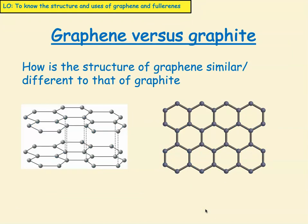Let's look at graphene versus graphite — how is it similar or different? Pause the video now and think about the ways that they are similar and the ways that they're different. The ways that they're similar is that they are both made of carbon, and they both have hexagonal rings of carbon. They're different insofar as graphite has multiple layers, whereas there's only one layer in graphene.